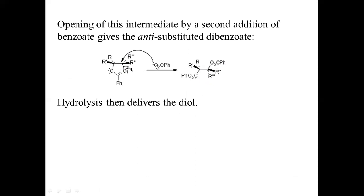The benzoate which is attacking comes from the opposite side of the carbon–oxygen bond — the opposite side of the cyclic intermediate. So the incoming benzoate nucleophile is aligned opposite to the previous benzoate. The orientation of these two groups is anti to each other. Hydrolysis of this diester leads to the formation of anti-diols. This is the mechanism of the Prévost reaction, which allows the synthesis of anti-diols from alkenes using iodine and silver salts of benzoates or acetates.